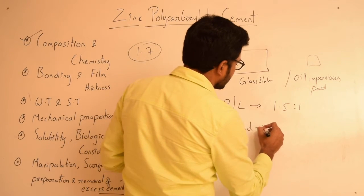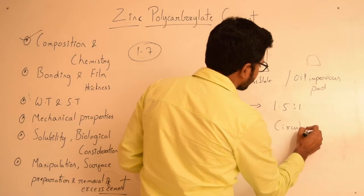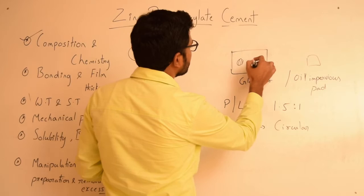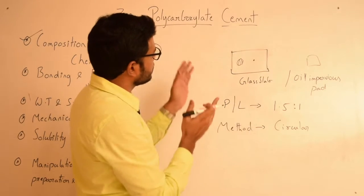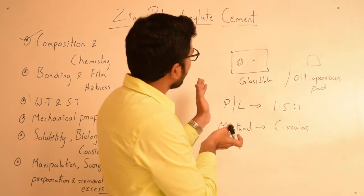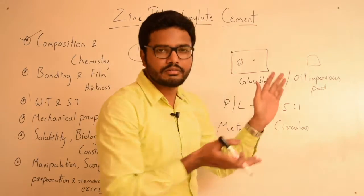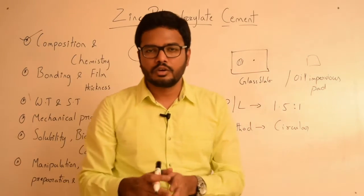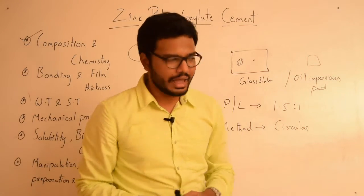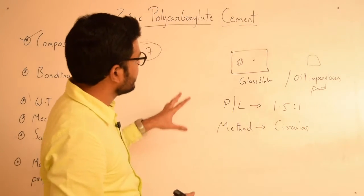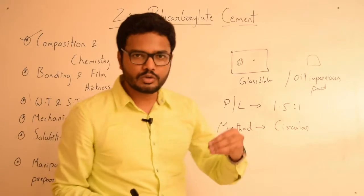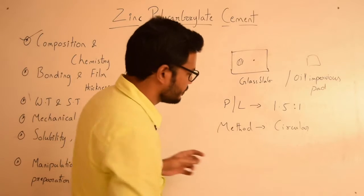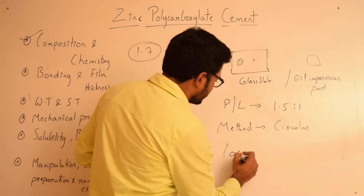The method of mixing is usually circular, and the bulk of the powder particles should be incorporated into the liquid. Mixing should not exceed approximately 2.5 minutes. Most importantly, this cement must only be used clinically when it still has glossiness.